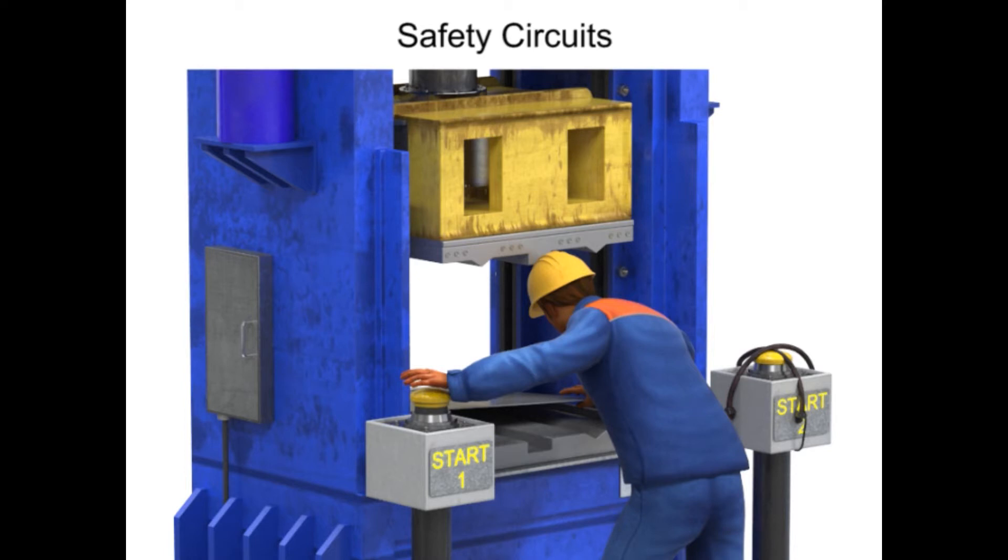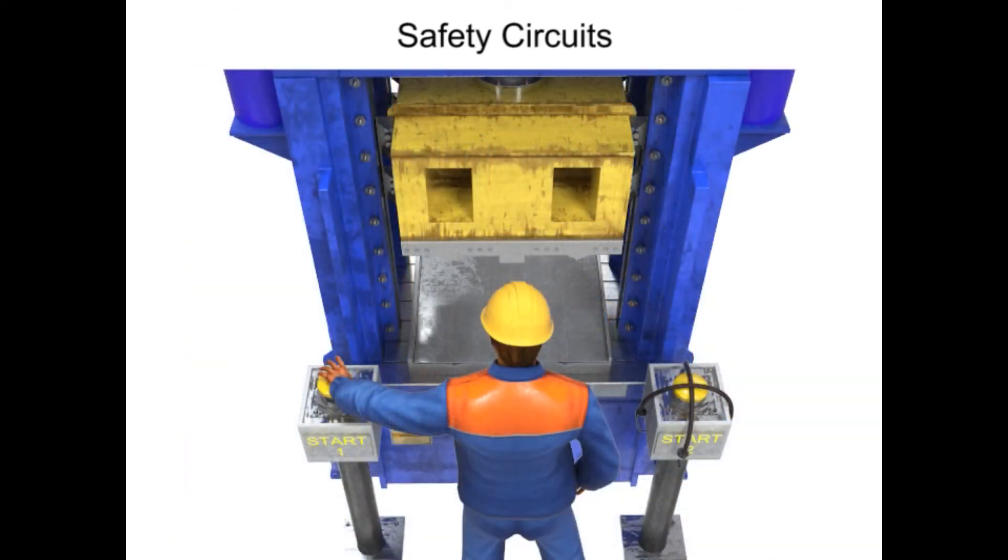To prevent this unsafe condition but still permit a single operator, anti-tie-down circuits are employed. An anti-tie-down circuit requires that the operator actuate both individual controls at the same time. If either control is prematurely actuated or continuously tied down, the cycle will not operate.